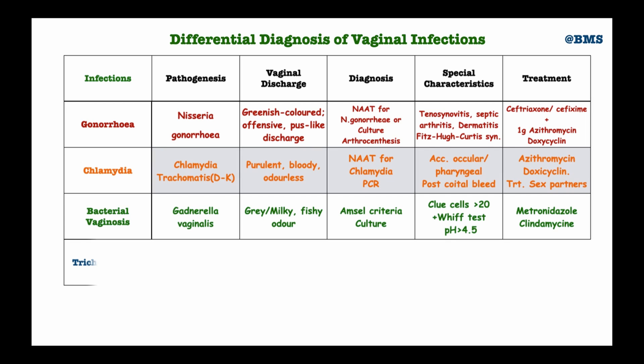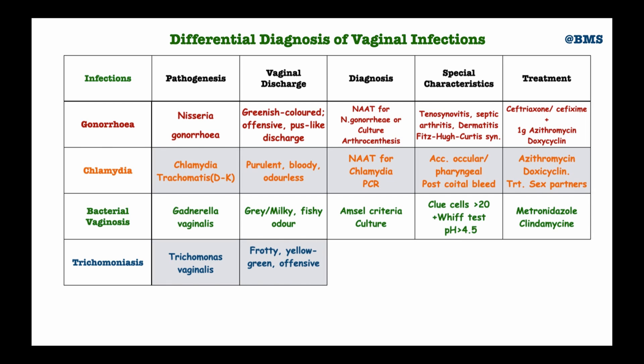We treat bacterial vaginosis with metronidazole or clindamycin. For trichomoniasis, the causative organism is Trichomonas vaginalis. The discharge is usually profuse with an unpleasant offensive odor, yellowish or greenish in color. The patient may complain of acute irritation and inflammation of the area. Diagnosis is made using a saline wet preparation of the vaginal swab or secretion, and culture can also be performed to isolate Trichomonas vaginalis.